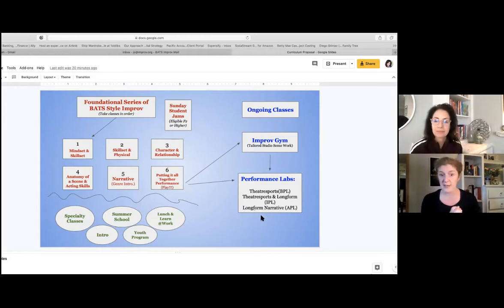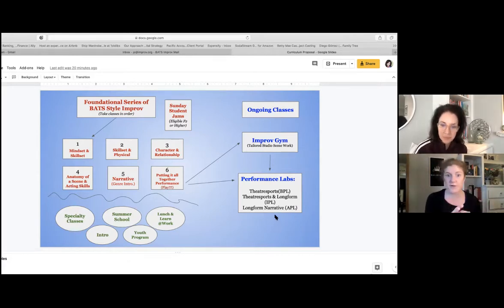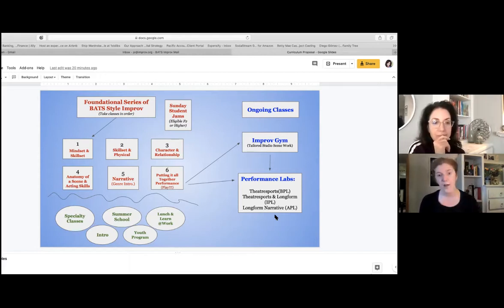The early performance labs look at theater sports and really honing short form skills all the way to long form narrative, advanced performance labs, which we have running right now. We have a performance lab performing soap right now. So that's the flow, right? We go through all the sequence of play in the red classes and then move on to ongoing honed ensemble work and storytelling in the blue classes.